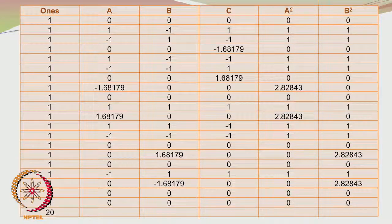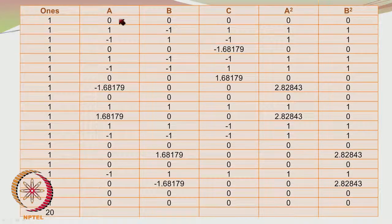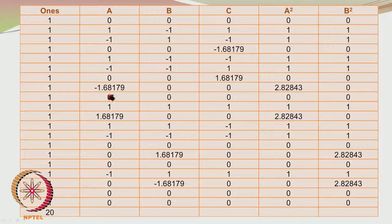Let us now look at the 2³ central composite design with 20 runs. How do the 20 runs come about? We have 8 factorial points (2³ = 8), then 6 axial points located at ±1.682 along each of the 3 axes — giving 6 axial points — making 14, plus 6 center point repeats. The design has been randomized, so center points appear at different locations throughout the run order.